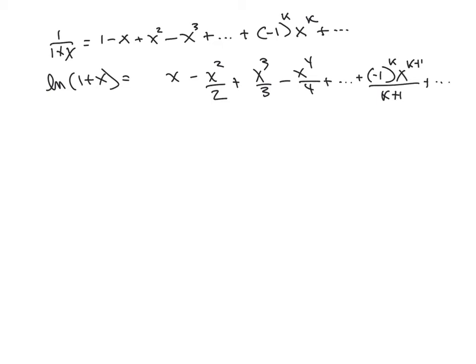Now, technically, we do need a constant. The constant, however, is pretty simple because if I set x to 0, I see the left side is natural log of 1, which is 0, and the right side is 0, so the constant has to be 0.